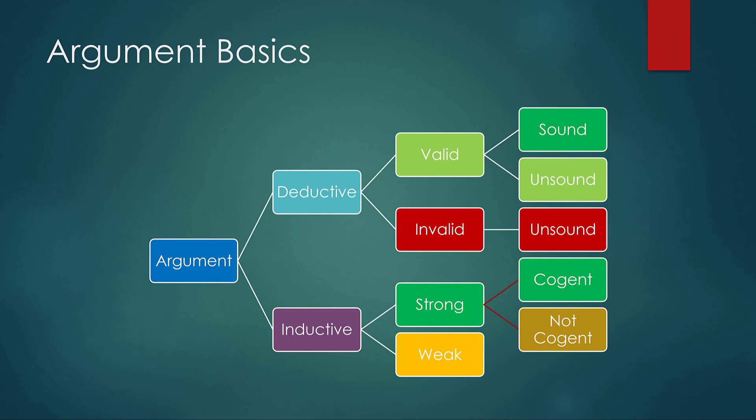If you have an argument that's invalid, then it's automatically unsound. Why? Because sound is valid plus all true premises. So an argument can only be sound one way — valid with all true premises — but it can be unsound in multiple ways: it could be invalid, it could be valid but lacking all true premises, or it could be both invalid and have not-all-true premises.